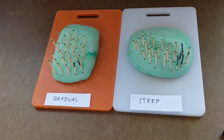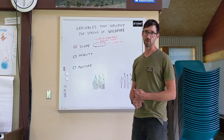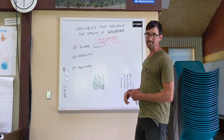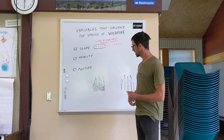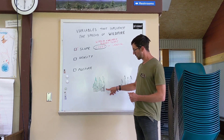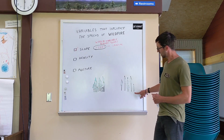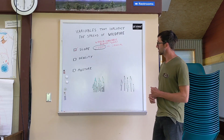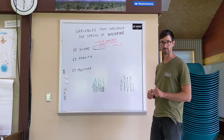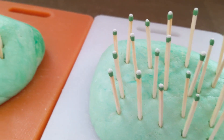It's time to interpret our results. Which side do you think has the most burnt trees? The next variable that we're going to look at that influences the spread of wildfire is density. Forest density can be seen here in this visual as a dense forest, where there are lots of trees growing really closely, compared to a sparse forest that has fewer trees spread apart a little bit more. So let's see how forest density influences the spread of wildfire.